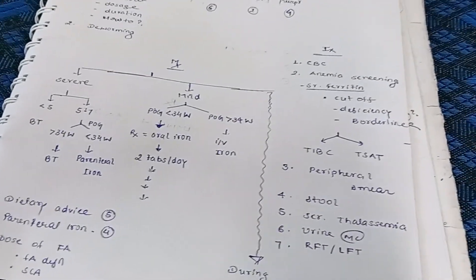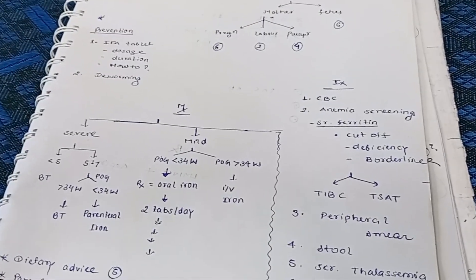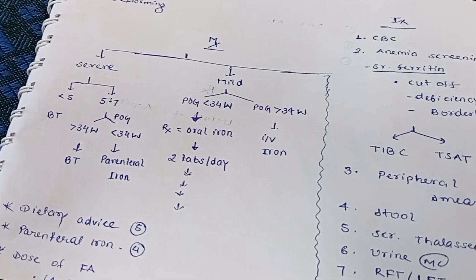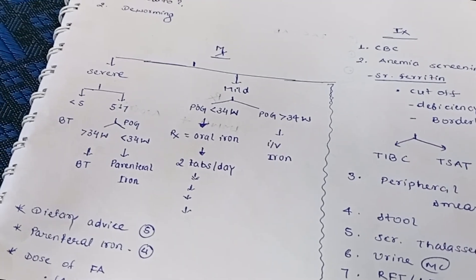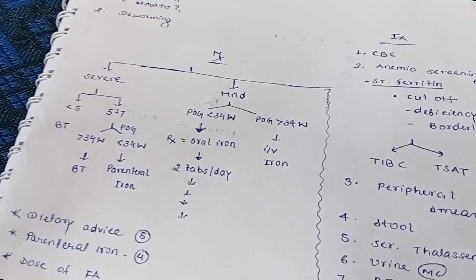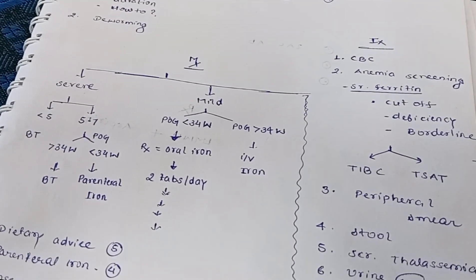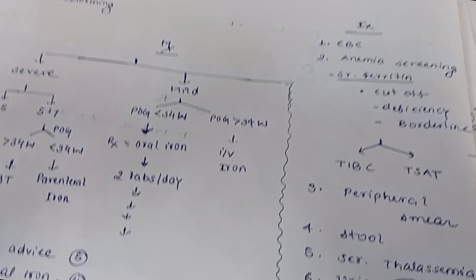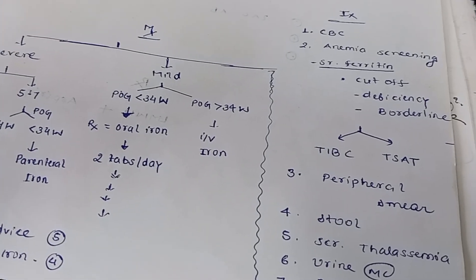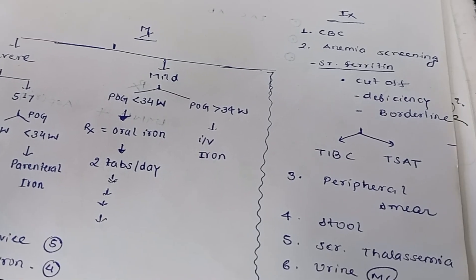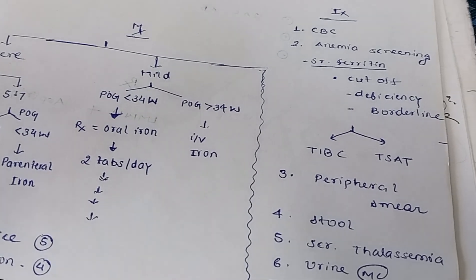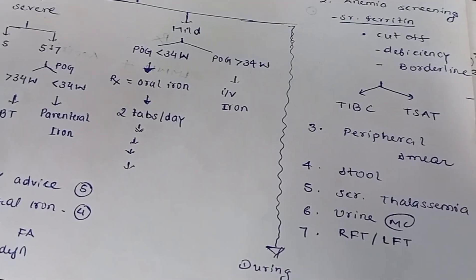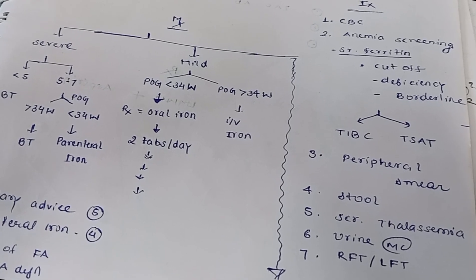We will also check stool to rule out worm infection. If the area is endemic for thalassemia, we check for thalassemia as well — to differentiate between thalassemia and iron deficiency anemia, we check red cell distribution width (RDW). RDW increases in iron deficiency anemia (greater than 13) but is less in thalassemia. We also do urine microscopy to rule out hematuria, and liver function tests.